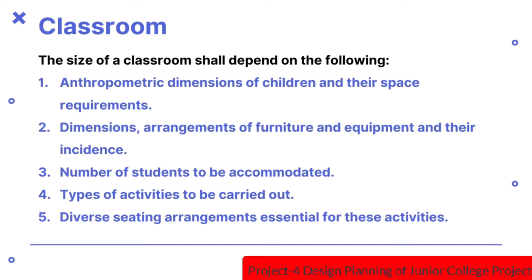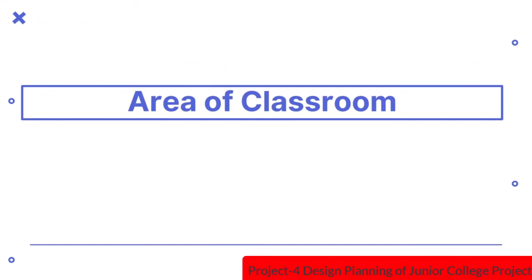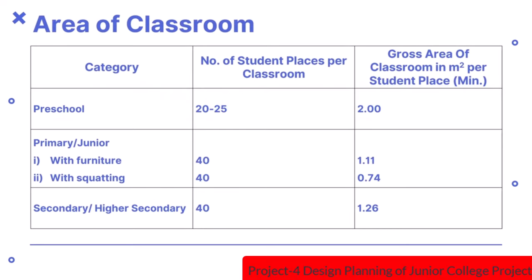The number of classrooms and sections per class should depend upon the size and level of school and use efficiency of spaces. The classroom should be designed for the following number of student places: nursery — 20 to 25 student places; primary and higher secondary — 40 student places. Area of classroom should be calculated on the basis of area needed per student place. For preschool, with 20 to 25 student places, the gross area per student place required is 2 square metres.